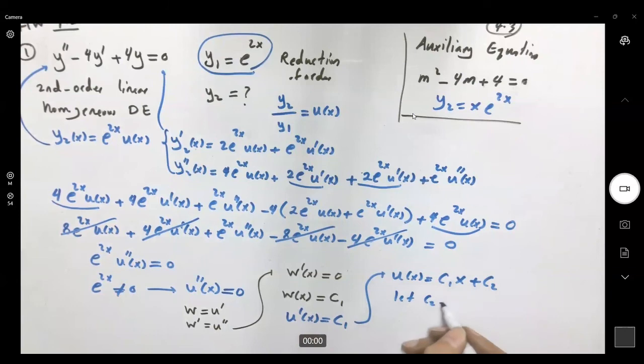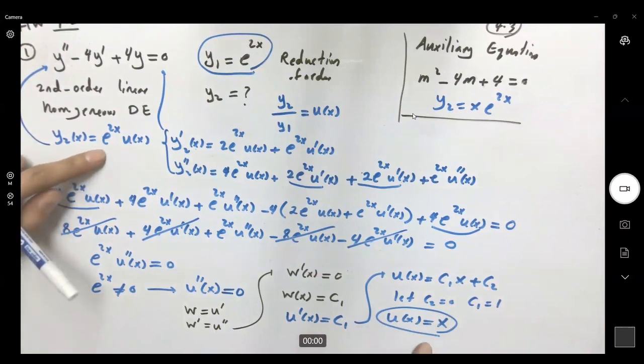Let c sub 2 be 0 and c sub 1 be just 1. So u of x becomes just x. So now that we found u, what's the meaning of that for y2? y2 is e to 2x times x.